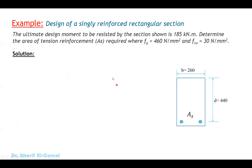To understand this well, let's take an example. It is required to design a singly reinforced rectangular section. The ultimate design moment is 185 kilonewton meters. F yield is given as 460 Newton per millimeter squared, Fcubd is 30 Newton per millimeter squared, and the cross section dimensions are b equal to 160 mm and effective depth d equal to 440 mm. It is a straightforward design problem.